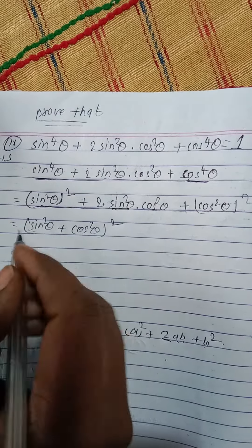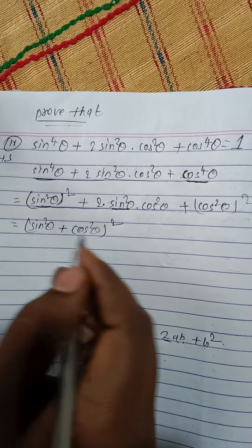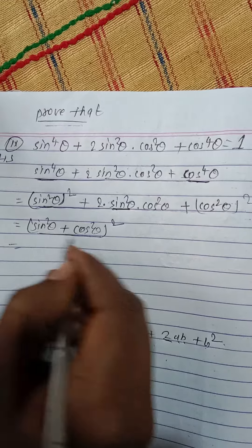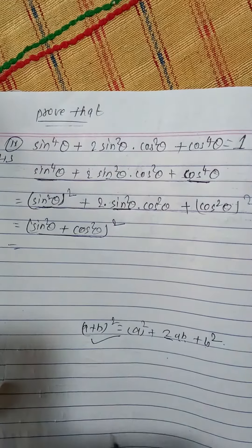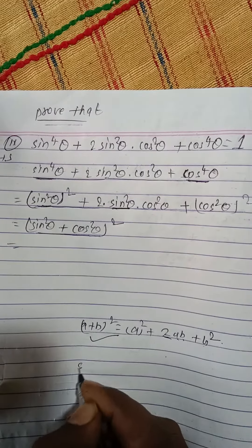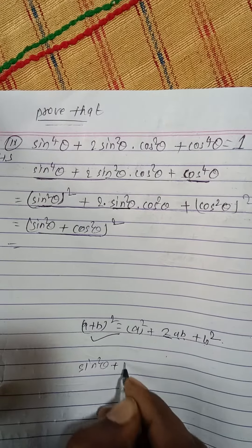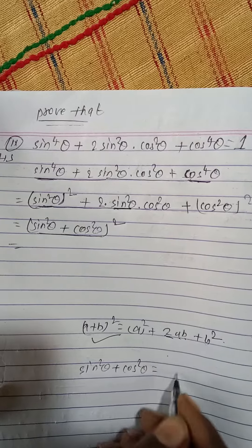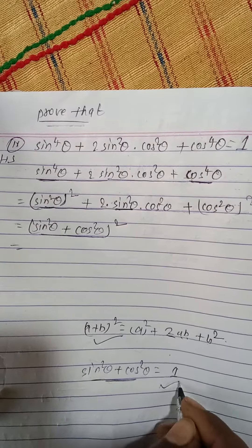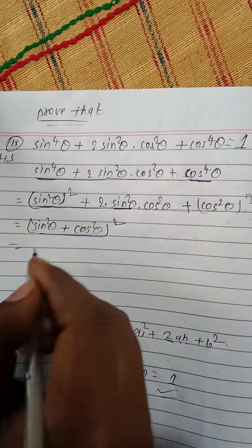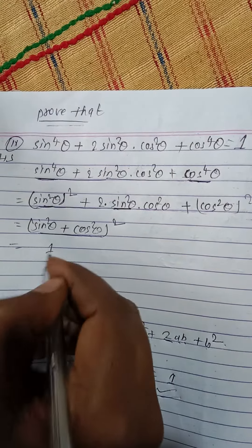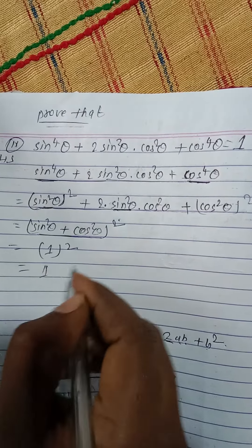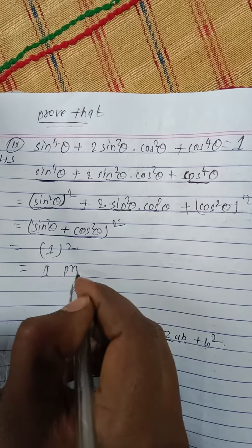So this equals sin square theta plus cos square theta, all squared. We know that sin square theta plus cos square theta equals 1. So we substitute 1 in place of it, giving 1 squared, which equals 1. Proved.